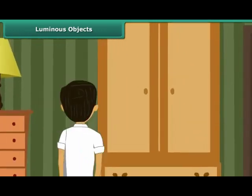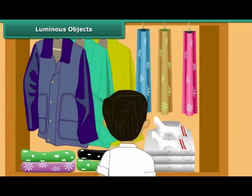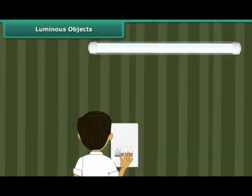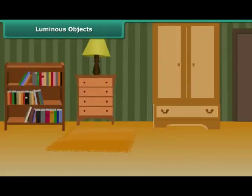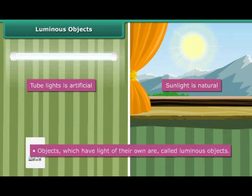You are getting late for school and you are not able to find your socks. You search for them in the cupboard. Since the cupboard is dark, you switch the tube lights on. Once you find the socks, you switch the lights off because there is sufficient daylight. We just talked about two types of light: light from the tube lights and daylight, which is the light from the sun. While sunlight is natural, light from the tube lights is artificial. Objects which have light of their own are called luminous objects. In our example, both sun and tube lights are luminous objects. The sun is a natural luminous object and tube lights are artificial, man-made luminous objects.